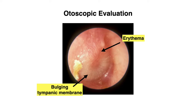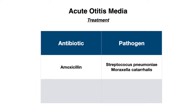So let's say that you've diagnosed your patient with acute otitis media in a child and you decide that you want to start treatment with antibiotics. What would be your first line agent? In children with acute otitis media, the first line antibiotic of choice is amoxicillin, because it will cover your typical pathogens, which include Strep pneumo as well as Moraxella catarrhalis.